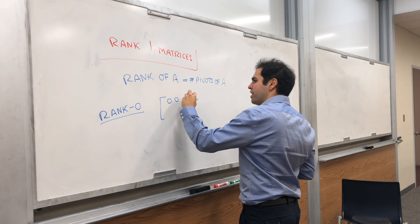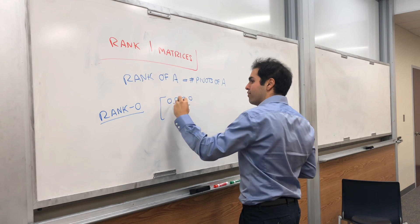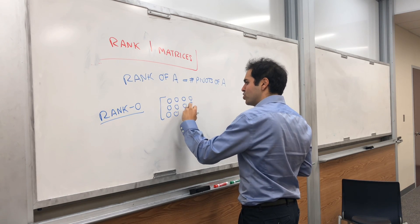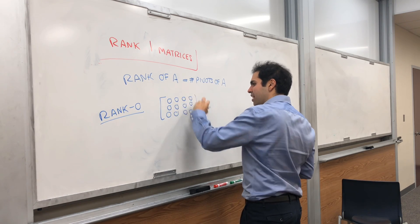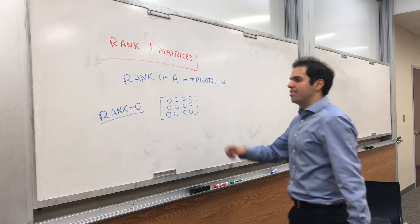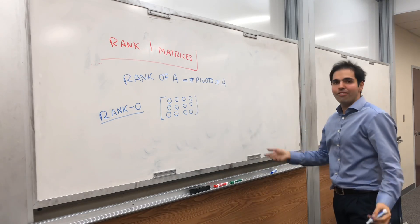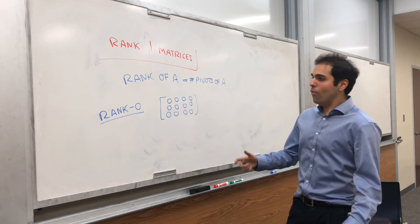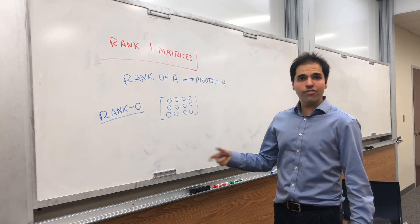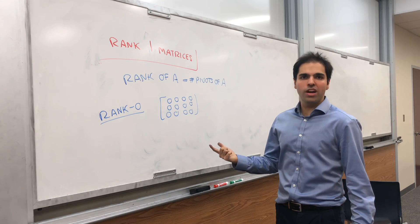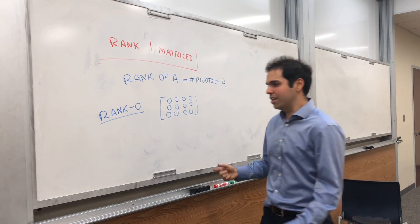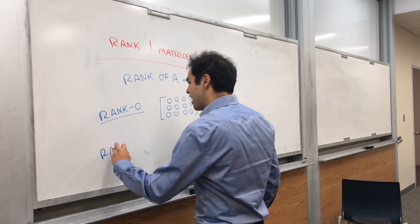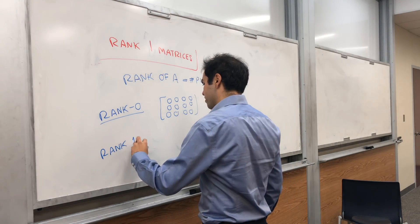Let's do today three by four matrices, just to show you that you could have ranks of non-square matrices. Now, what would it mean for a matrix to have rank one? It really means that there is one pivot.